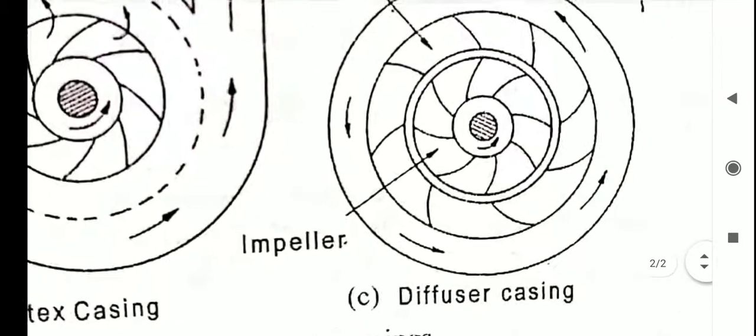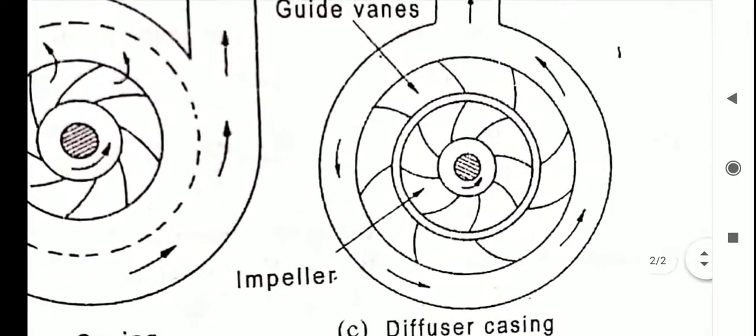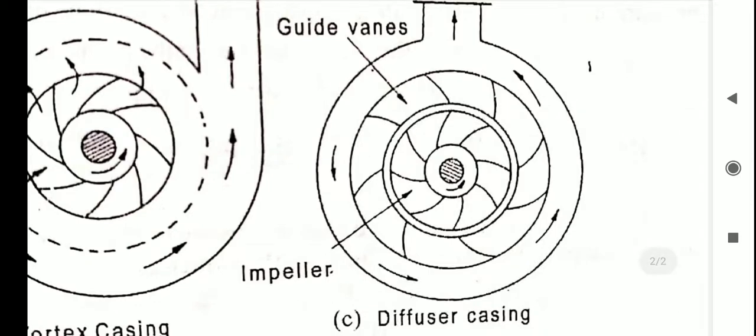The water from the impeller enters the guide blades without shock and flows through the increased area of flow of the guide vanes. As the water passes through the increased area of the guide vanes, the velocity is further reduced and hence more pressure recovery is achieved.